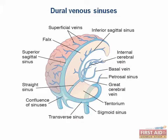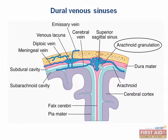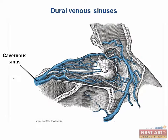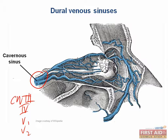The dural venous sinuses are where venous blood runs and also where CSF is resorbed. All sinuses eventually drain into the internal jugular vein. CSF flows into arachnoid granulations where it exits the subarachnoid space and enters the bloodstream. The most important sinus to know is the cavernous sinus because of the important structures that run through it — cranial nerves 3, 4, V1, V2, and 6 (the abducens nerve). Cavernous sinus thrombosis can lead to headache as well as cranial nerve deficits.